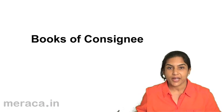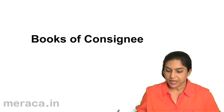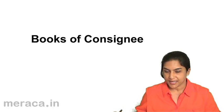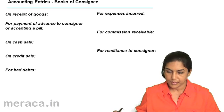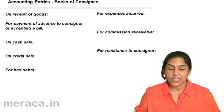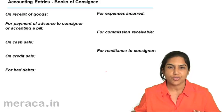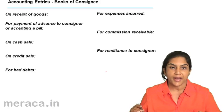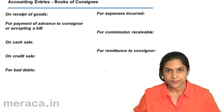Let's see what the accounting entries will be in the books of the consignee. First, on receipt of goods. When Mukta sends goods to Kanata, what would be the entry in the books of Kanata?